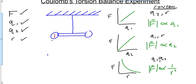He puts these together, and he gets something like this. F is related to Q1 times Q2 over R squared. So F is not equal to that mathematical relationship, but it's related to that mathematical relationship.